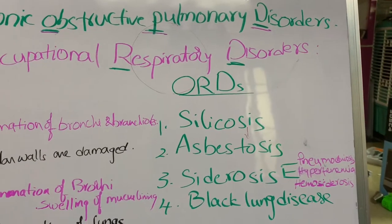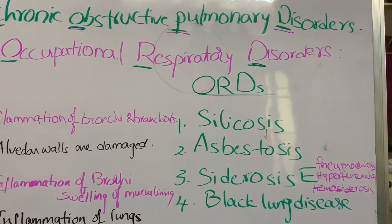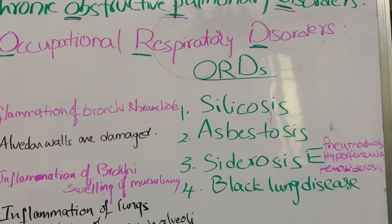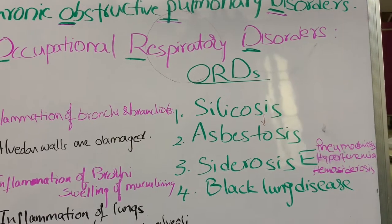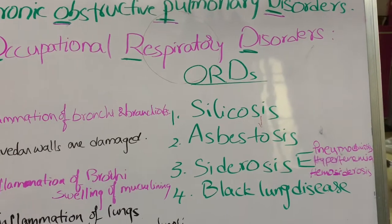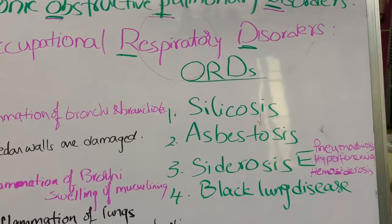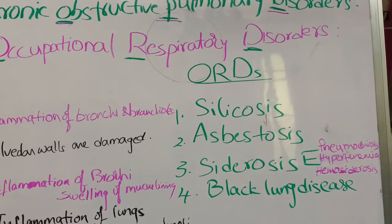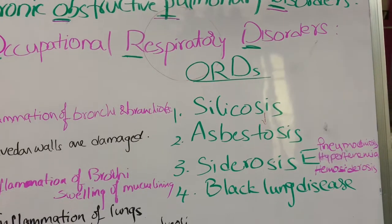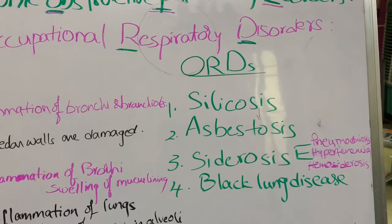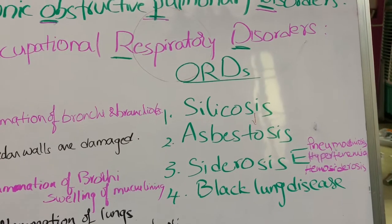The second occupational respiratory disorder is asbestosis, caused by long-term exposure to asbestos dust. People who are long-term exposed to asbestos dust have their lungs damaged by the asbestos particles.